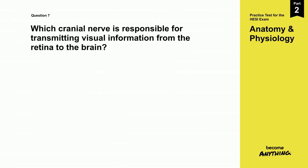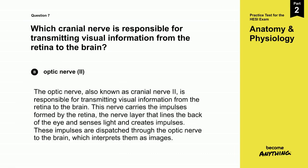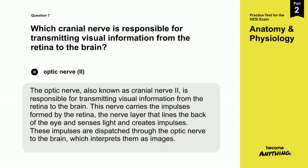The correct answer is B. The optic nerve, also known as cranial nerve 2, is responsible for transmitting visual information from the retina to the brain. This nerve carries the impulses formed by the retina — the nerve layer that lines the back of the eye and senses light and creates impulses. These impulses are dispatched through the optic nerve to the brain, which interprets them as images.